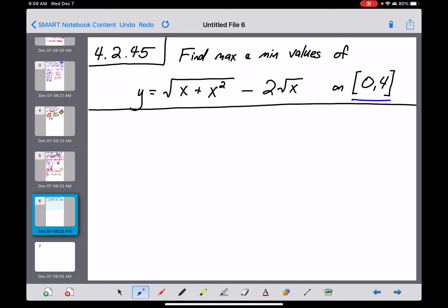Max and min values, otherwise known collectively as extreme values, only occur at critical points and endpoints. We already know our endpoints right here, but we got to find critical points. That's where your derivative is zero or undefined. So we need to begin here by finding our derivative.